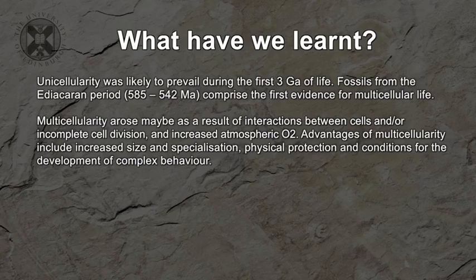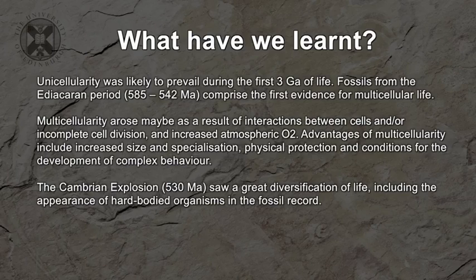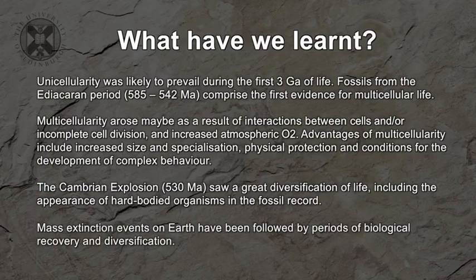We've looked at some of the advantages of multicellularity, size and specialization, that would have been very successful traits for organisms trying to make a living on a planet with many challenges. And we saw that in the rock record, about 530, 540 million years ago, a sudden sharp rise in the preservation of multicellular organisms because of hard body parts that were preserved in the rocks and give us an indication that multicellular life was well on its way to becoming one of the dominant forms of life on the planet.